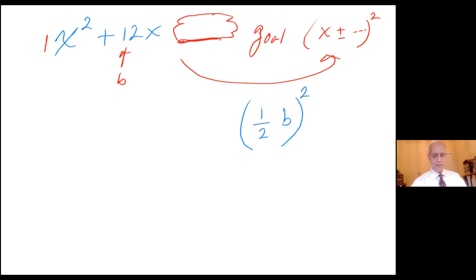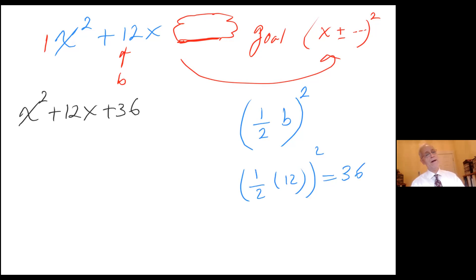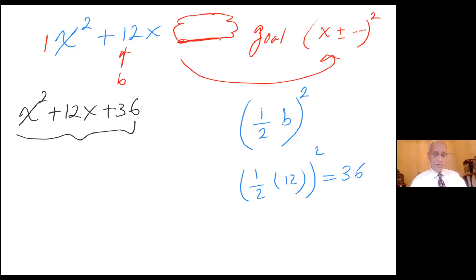So in this case, what is b? b is 12. One half of 12, quantity squared: one half of 12 is 6, and 6 squared is 36. So that's the magical number that I need. I'm going to rewrite this as x squared plus 12x plus 36 — the magical number needed to complete the square. Since I have an expression here, I'm not at liberty to just introduce 36 out of thin air, so I have to balance that with minus 36.